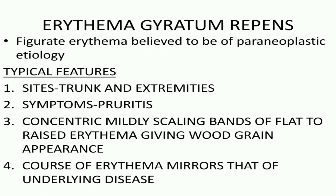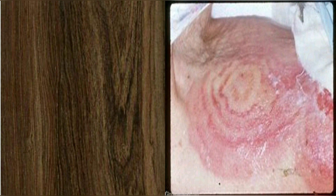It presents as concentric mildly scaling bands of flat to raised Erythema giving a typical wood grain appearance. The course of Erythema mirrors that of the underlying disease. This shows the resemblance between wood grain seen in the image on the left side and Erythema Chiratum Ripens in the image shown on the right side.